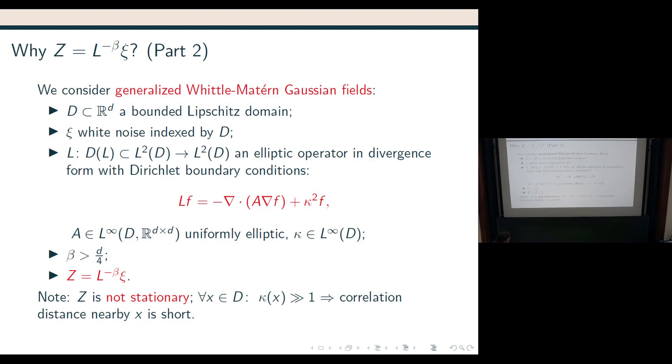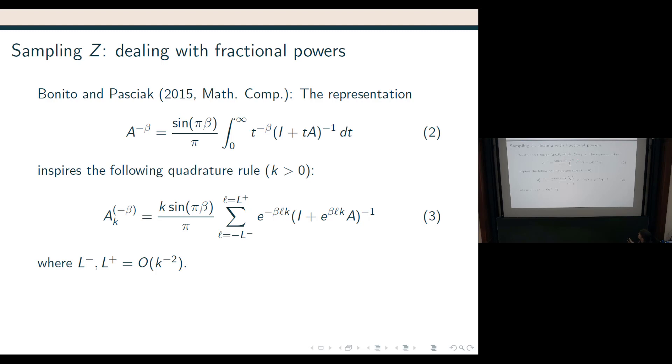Okay. So, this is our model, right? Z is L to the power minus beta psi. And I said, then what we do is we do a finite element method for L. We apply a finite element method to L, and we do a quadrature rule for the power. So, actually, the quadrature rule for the power, it's not our idea, it's also not Christine's, but it comes from an article from Bonito and Pasciak from 2015. Of course, I'm not even sure that they were the first to think of this. I think they were the first to think of this specific quadrature rule. You can think of various ones.